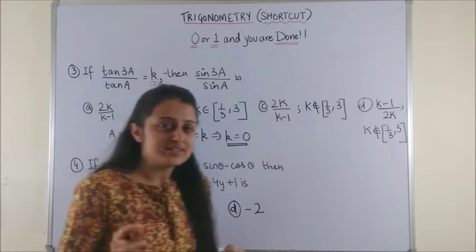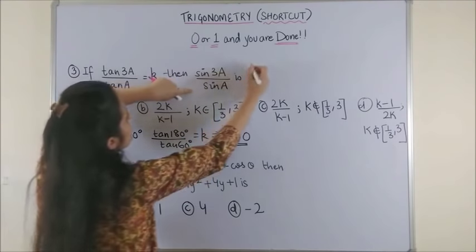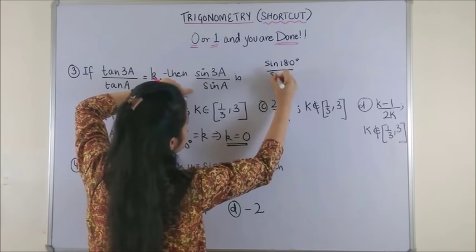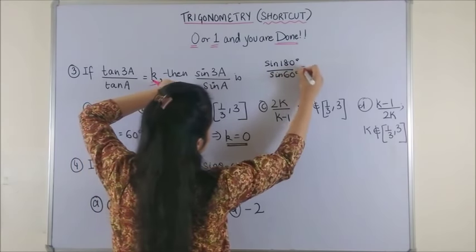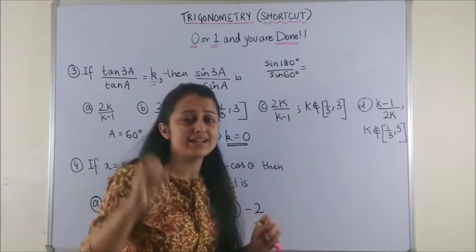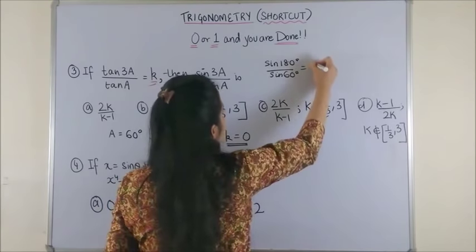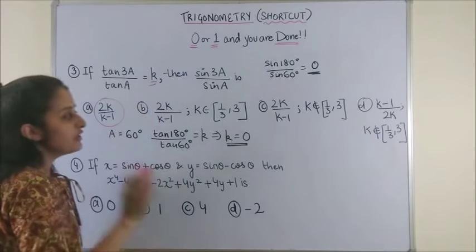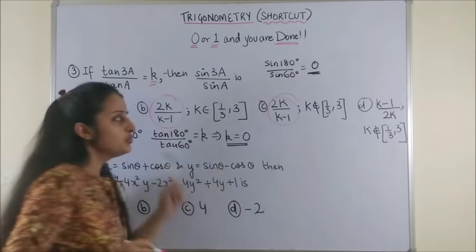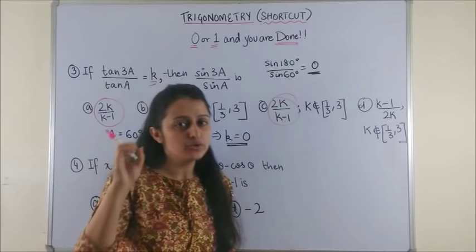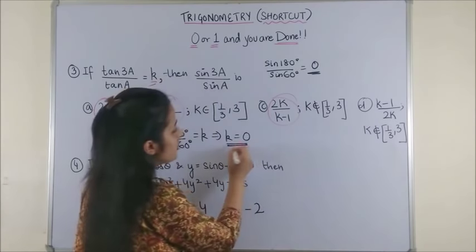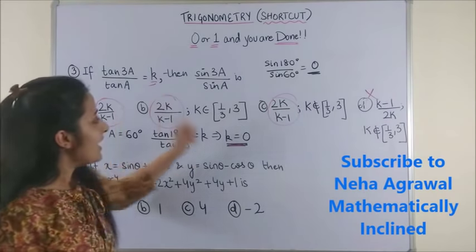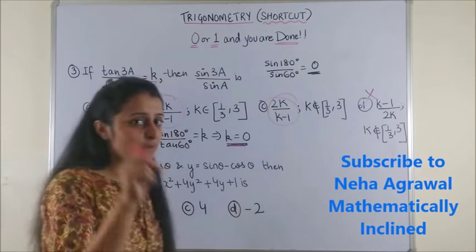Once I get k to be a 0, now I have to start putting it here. So, I get sin of 180 degrees upon sin 60 degrees. Now, if you check for sin 180 degrees, again it's a 0. So, I have to see which of the options matches my answer 0. So, if you try putting in any of these, you know you are going to get your value 0. However, this case, since your k is coming out to be 0 which is in the denominator is certainly out. So, I have a, b, c to be selected from.